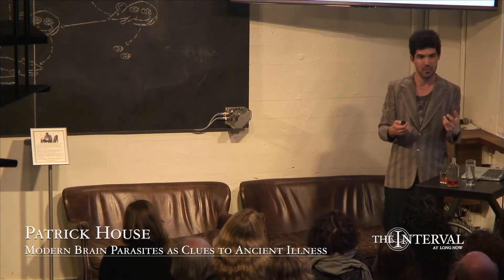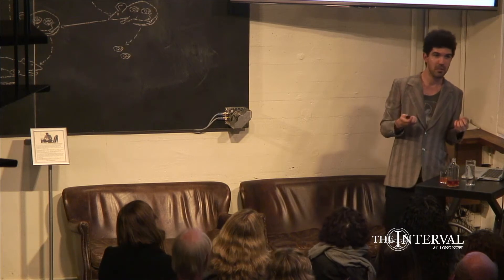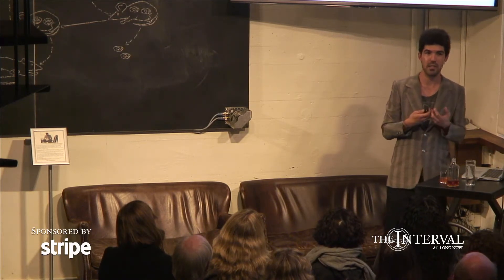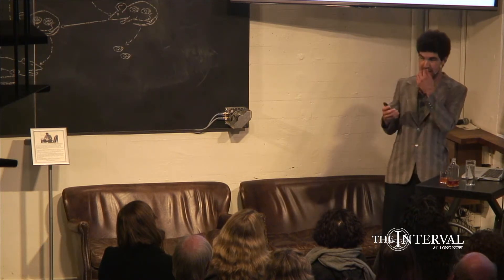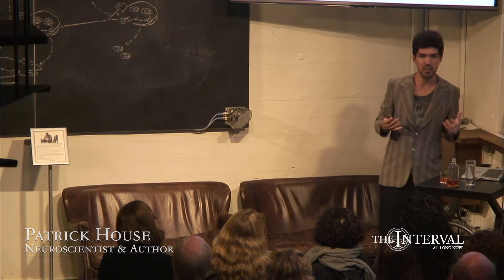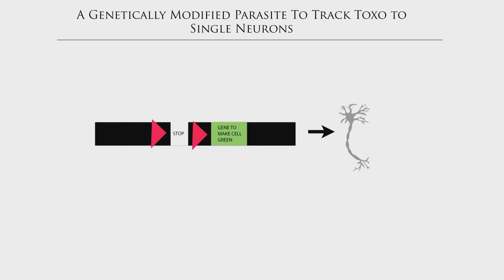To figure out where the parasite goes, one way is to genetically modify both the parasite and the mouse, building in a coincidence detector. Every single neuron in the mouse is genetically modified to have a gene that produces green, but it's turned off — like a light switch. Then you genetically modify the parasite to come in and flip this switch.